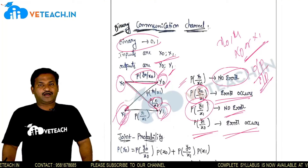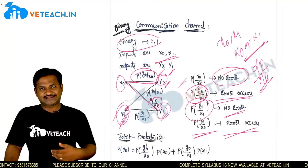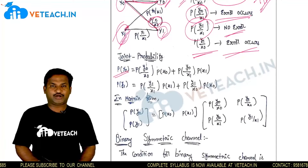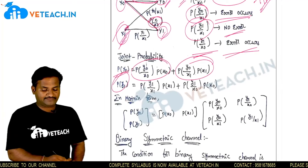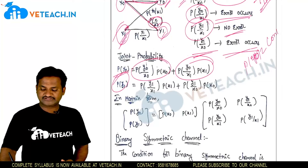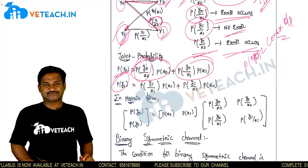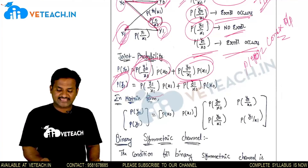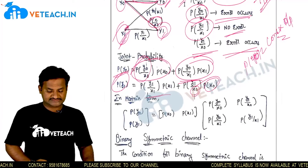How can the binary communication channel be expressed in terms of joint or conditional probability? The mathematical representation: p(y0) = p(y0|x0)·p(x0) + p(y0|x1)·p(x1), and similarly p(y1). In matrix representation, [p(y0), p(y1)] equals [p(x0), p(x1)] multiplied by the channel matrix with those four conditional probabilities.